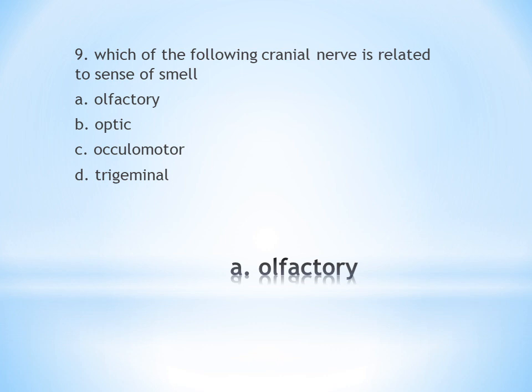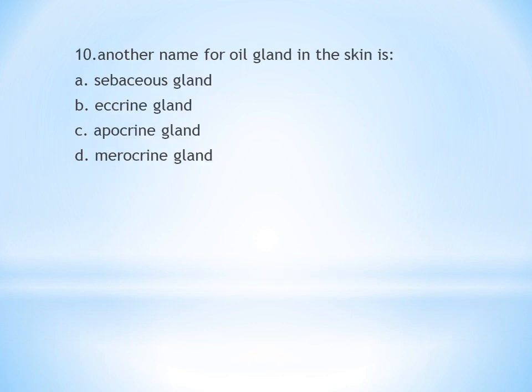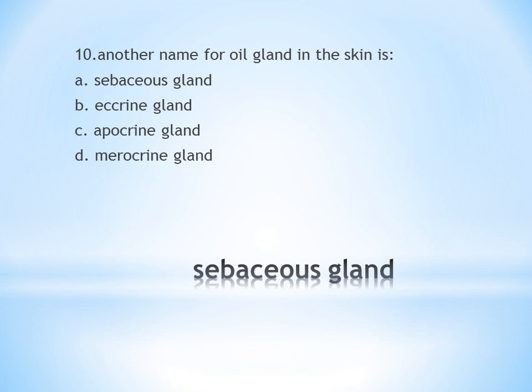The answer for the cranial nerve related to sense of smell is olfactory (cranial nerve I). Tenth question involves merocrine gland — the merocrine gland is an oil/sebaceous gland, while the other options are sweat glands.